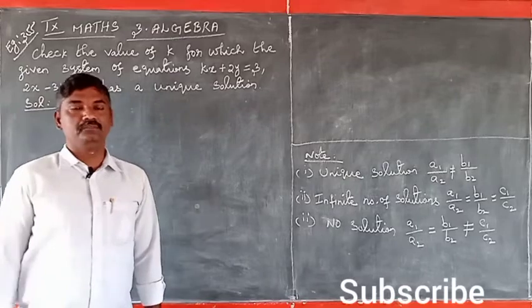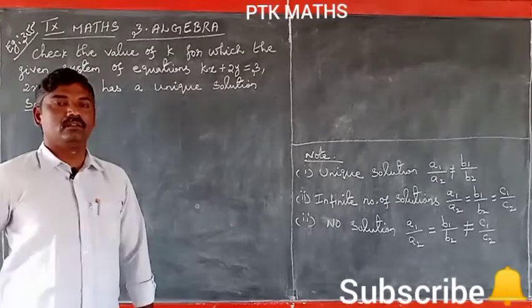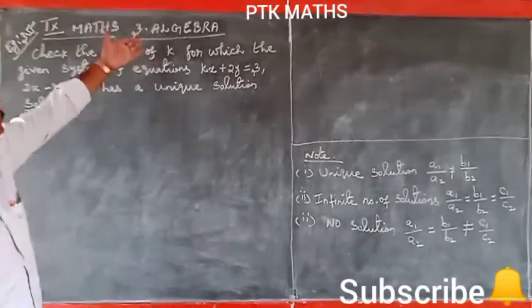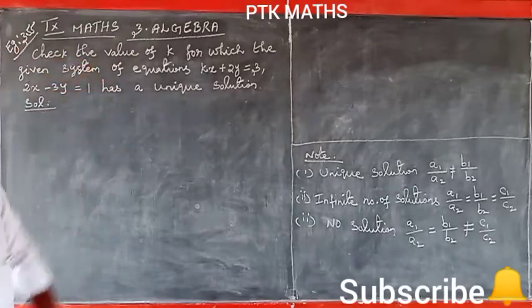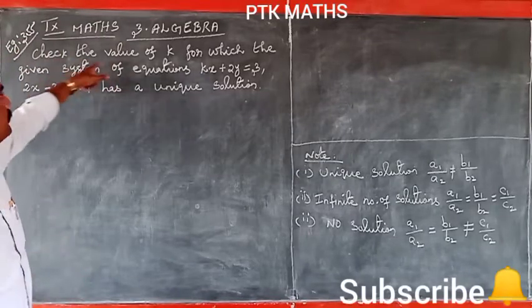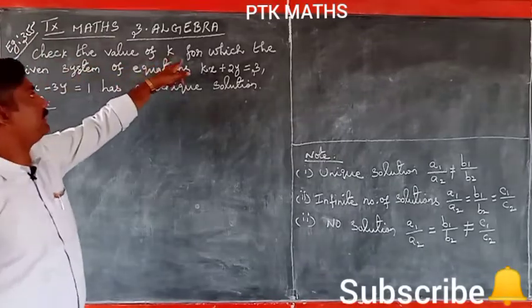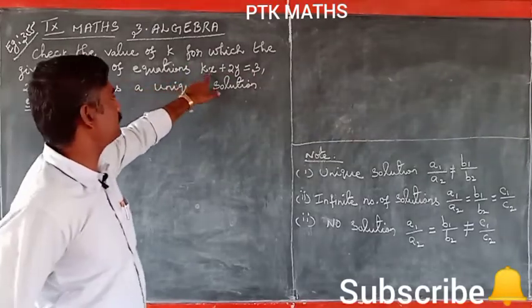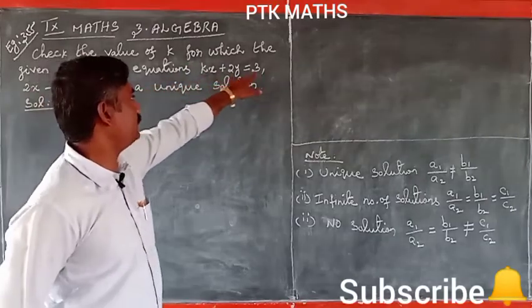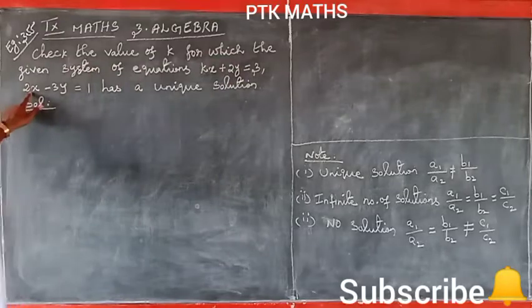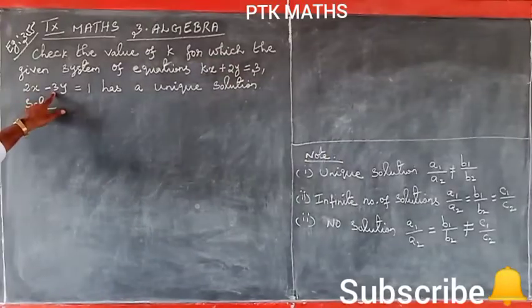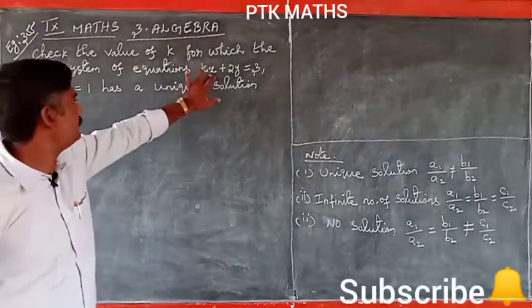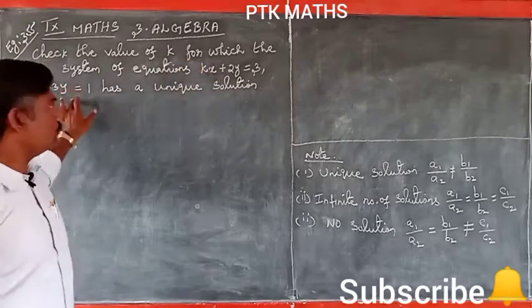Dear students, in this video we are watching 9th Maths, 3rd chapter, Algebra, example 3.55. Check the value of k for the given system of equations: kx plus 2y is equal to 3, and 2x minus 3y equal to 1, which has a unique solution.